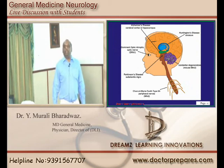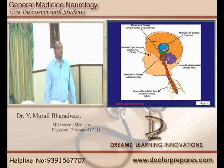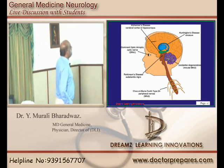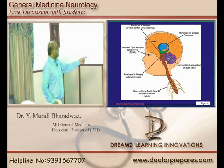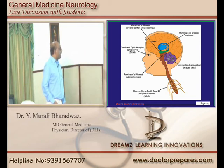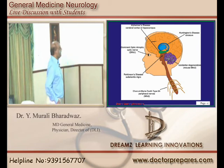A quick summary: in Alzheimer's disease the problem is in the cerebral cortex and hippocampus; in Huntington's disease there is dementia and the striatum is affected; in Parkinsonism the substantia nigra is affected; and in Charcot-Marie-Tooth syndrome it is the peripheral nerves which are affected. You must be very clear about which location is affected in each condition.